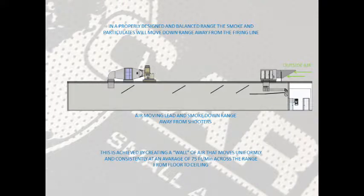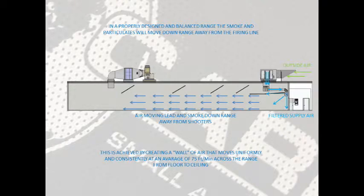100% outside air enters the system. That air is filtered and supplied to the range. The air moves at an evenly distributed and constant rate of 75 feet per minute across the range with no turbulence, moving smoke and contaminants away from the shooter.